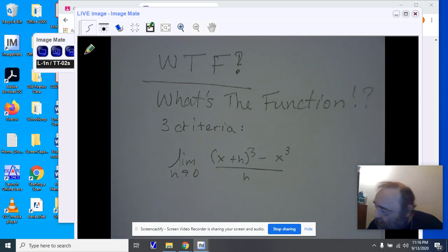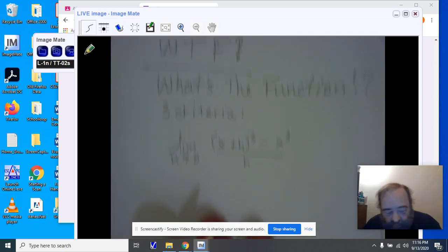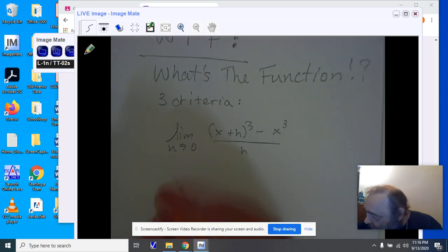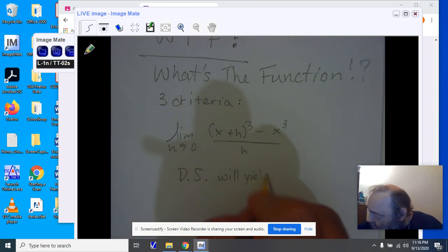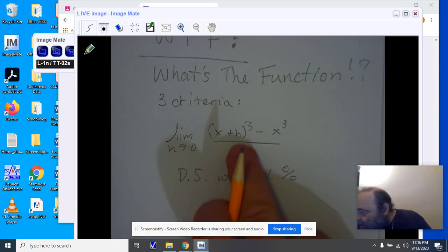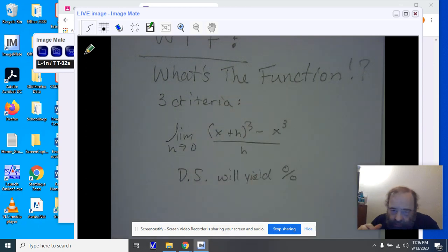Now in this function, when we're playing what's the function, we're talking about three criteria. The first is that direct substitution will yield zero over zero. Notice if I let h go into the numerator and the denominator, I get x cubed minus x cubed, and that's zero. When I plug in the h in the denominator, I get zero.